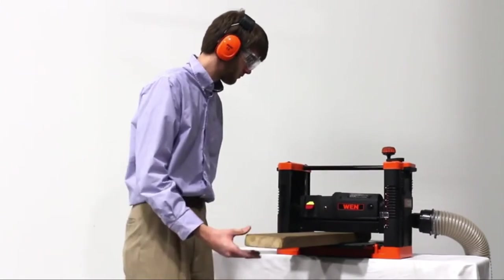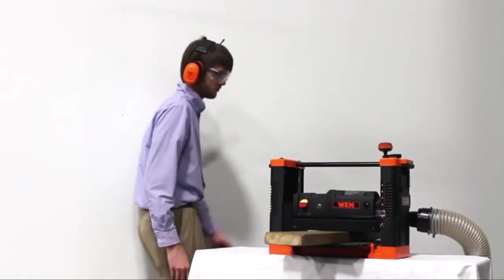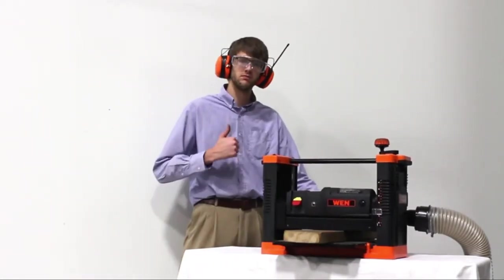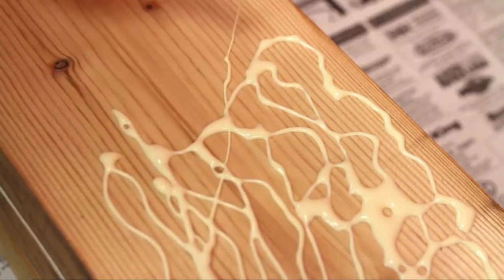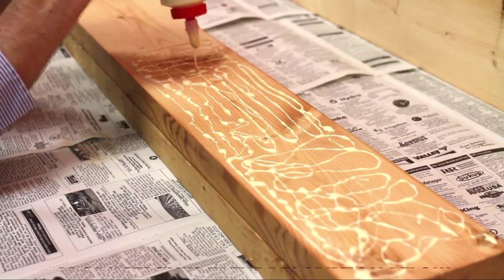Next, while donning your favorite business casual, plane off both faces of the boards so they are nice and flat. After that, glue the faces of the boards to one another with liberal amounts of glue to make sure the entire face gets covered.